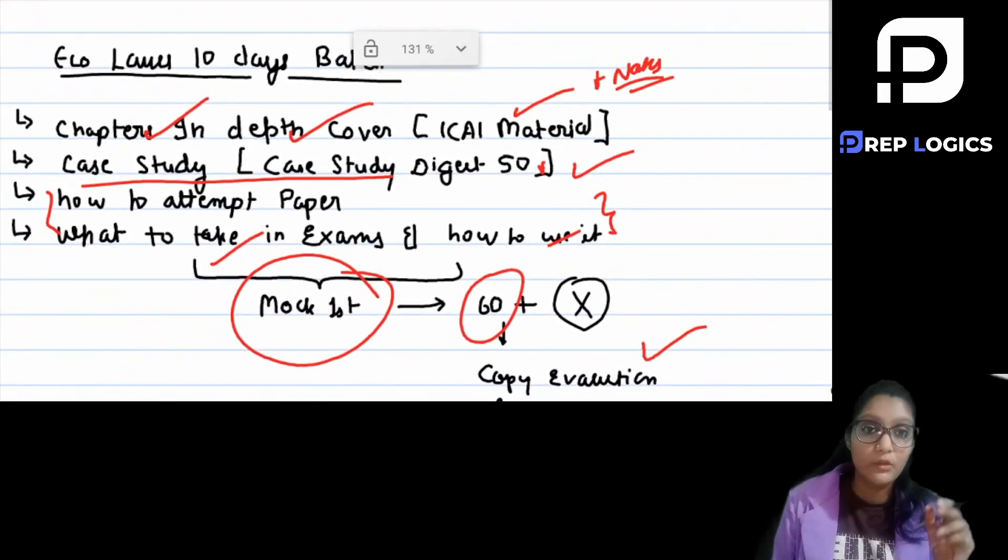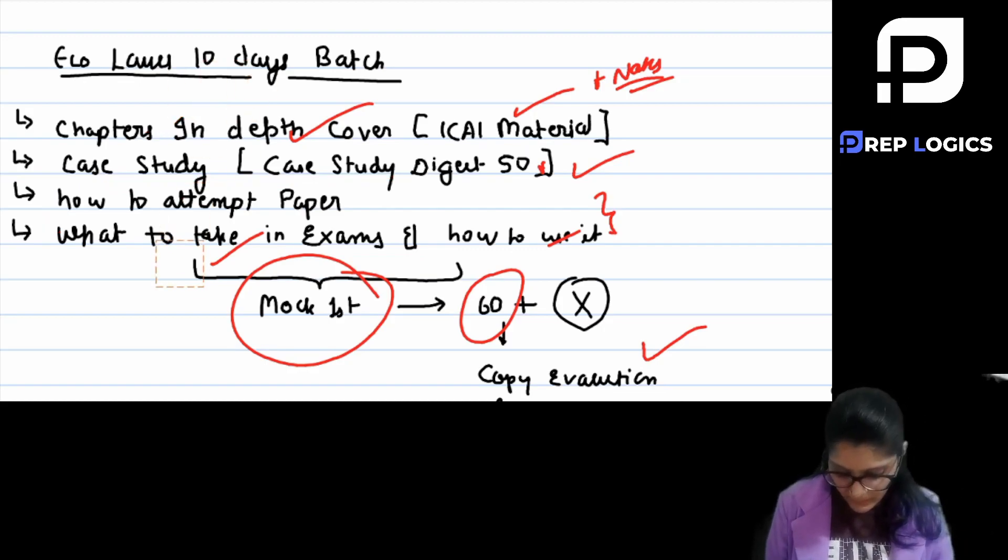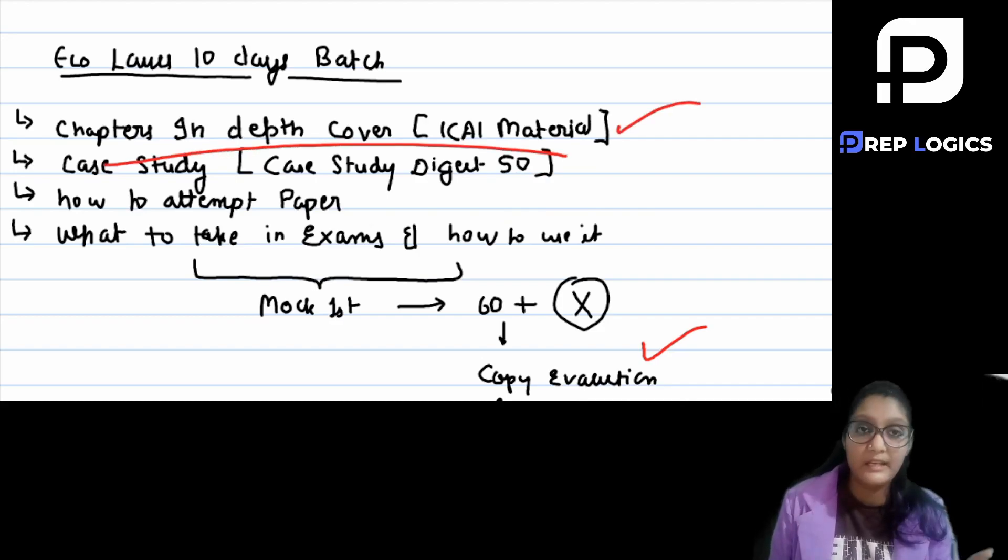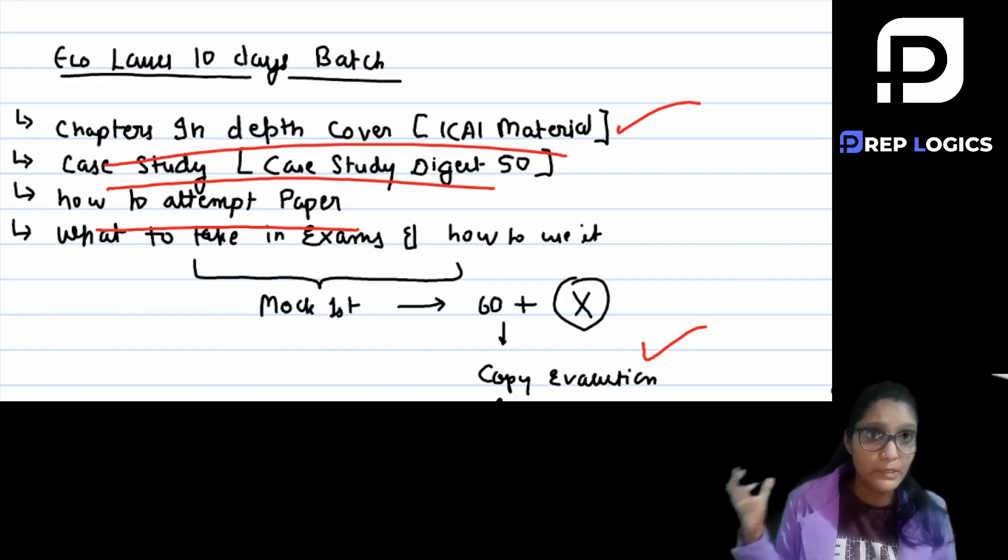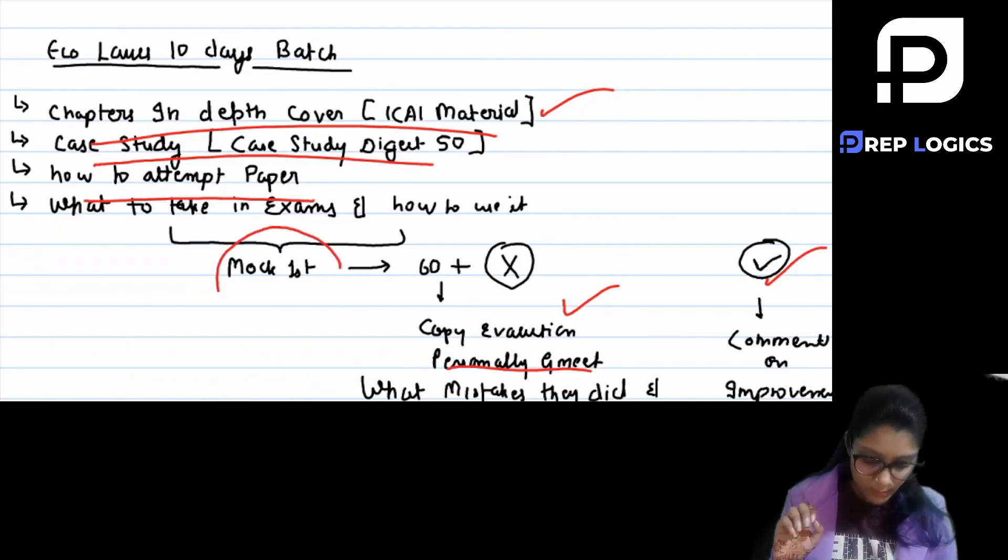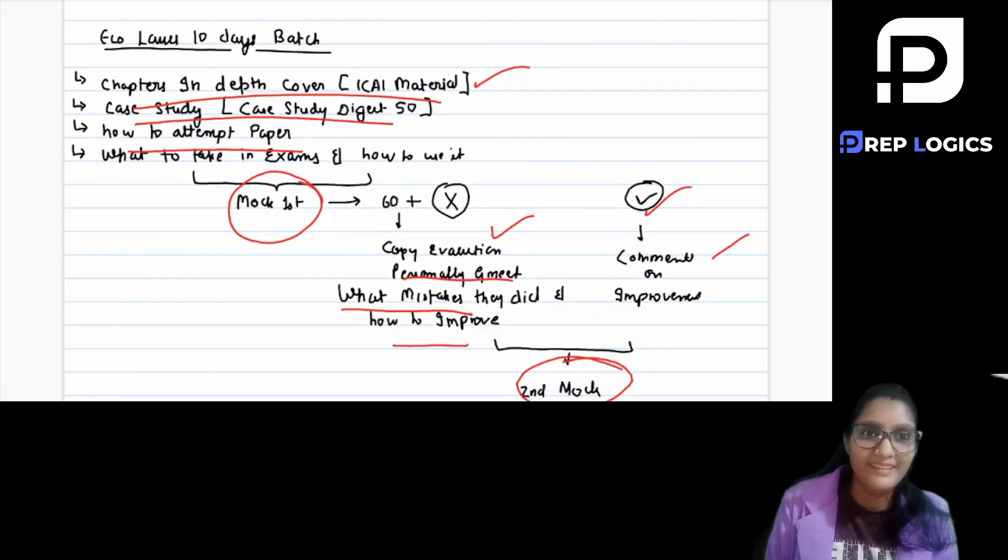So I hope that how we are going to cover Economic Laws and how we are targeting 70 plus will be fulfilled. We are going to take in-depth coverage. After that we are going to practice the case studies because mostly I expect two case studies at least from ICI Case Study Digest. Then how to attempt the paper and what to take into the examination which is a question, and how to properly utilize that 4 hours. We will cover it with mock tests with checking and with proper evaluation. So if you do everything in this class and give it 10 days then no one can stop you.